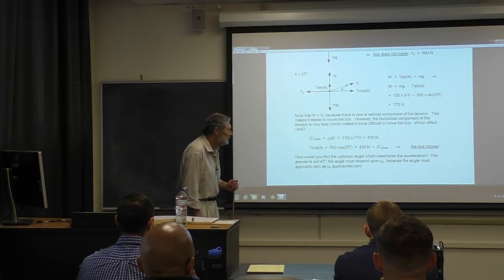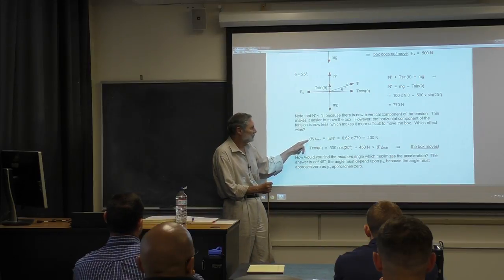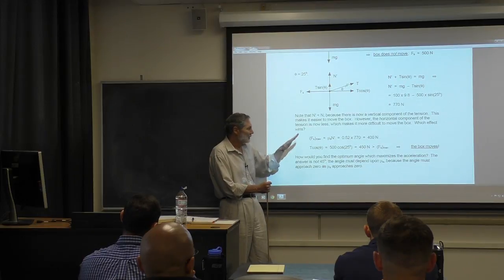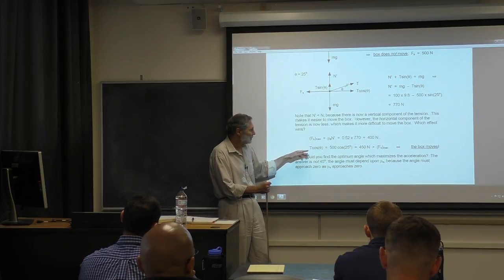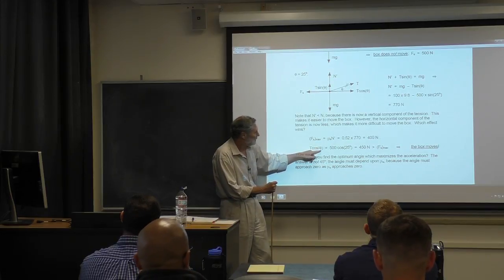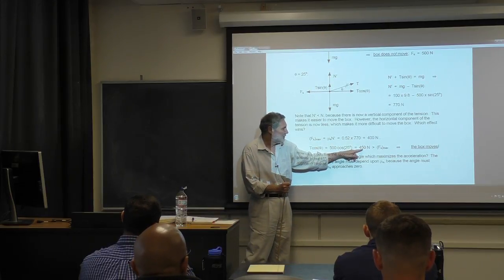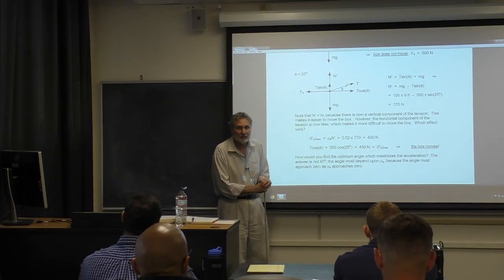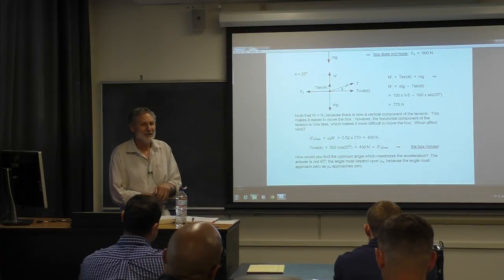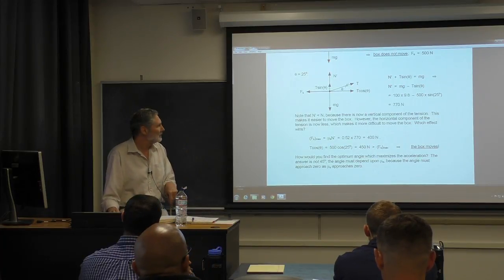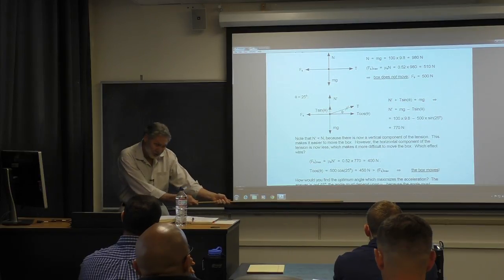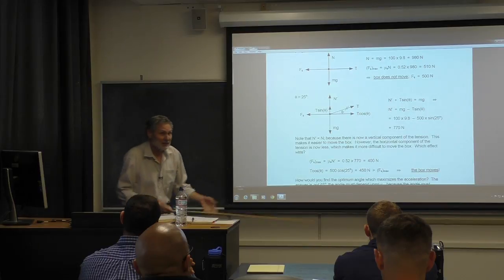That maximum static frictional force of 400 newtons is what we need to break. Now we find the horizontal component of our 500 newton force — it's 450 newtons. So 450 N exceeds 400 N, and we conclude: you can move the box! This is a little counterintuitive — you might think that to move something heavy you should pull straight horizontally, but that's not the case here.